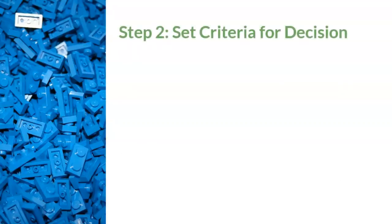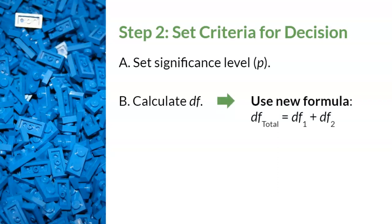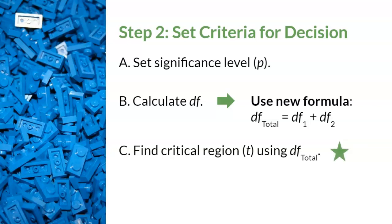Step two — set the criteria for a decision. This step has modifications for comparing two groups. First, we still set our significance level p as in previous t-tests. Second, we calculate degrees of freedom with a new formula: df subscript total equals the degrees of freedom for the first sample plus the degrees of freedom for the second sample — that is, (n minus 1) for each sample, then add them together. Third, we find the critical region t using df total. This is an important modification students commonly forget.